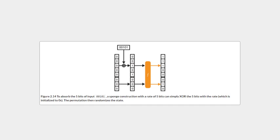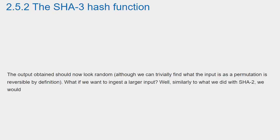Like all good hash functions, we need to be able to hash something. To do that, we simply XOR the input with the rate of the permutation's input. In the beginning, this is just a bunch of zeros. The capacity is treated like a secret, so we won't XOR anything with it. Figure 2.14 illustrates this. The output obtained should now look random, although we can trivially find what the input is, as a permutation is reversible by definition.